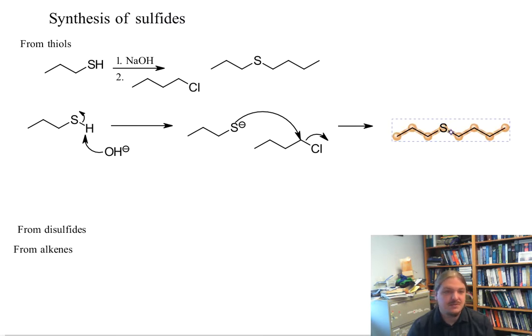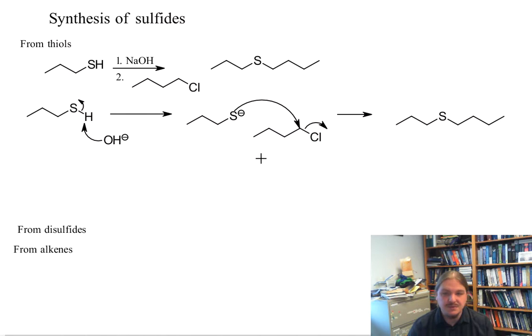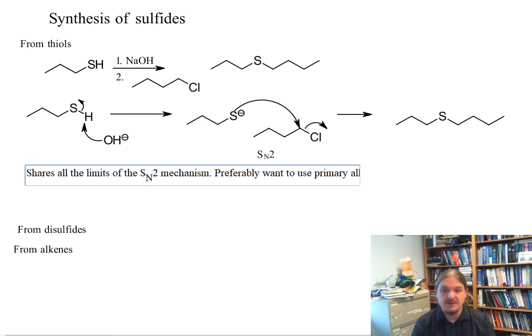And there we go. We have a sulfide by an SN2 substitution reaction. Now, because this mechanism here is an SN2 substitution, then that means that using thiols as nucleophiles with alkyl halides are limited. This reaction shares all the limitations of any other SN2 type reaction. So we preferably want to use primary alkyl halides. Secondary alkyl halides probably would work. And our thiols themselves can't be too terribly bulky, or the SN2 reaction won't work very well either.